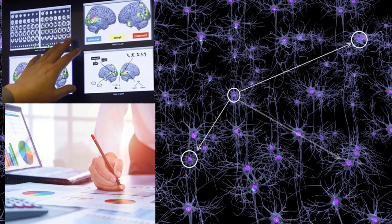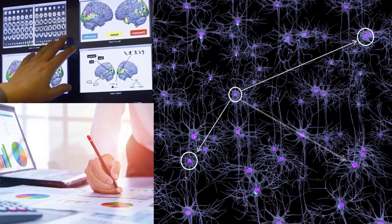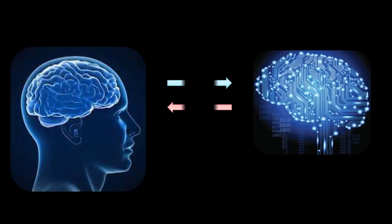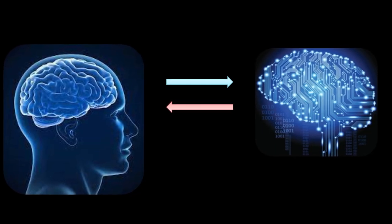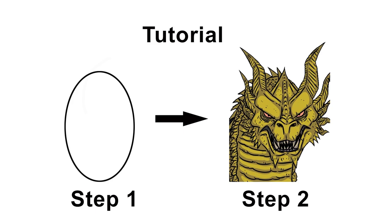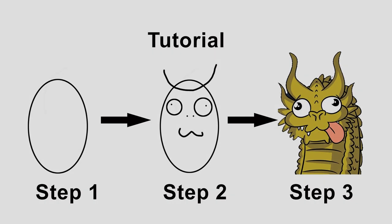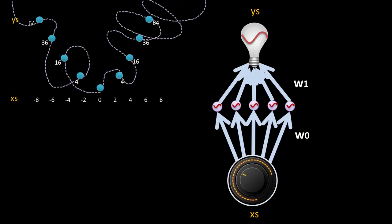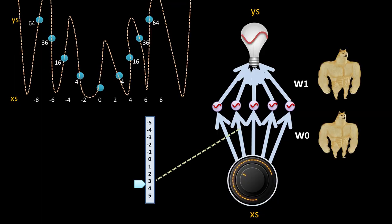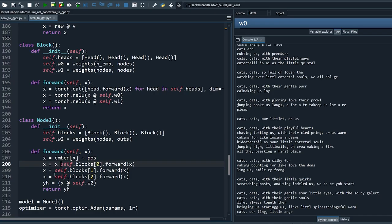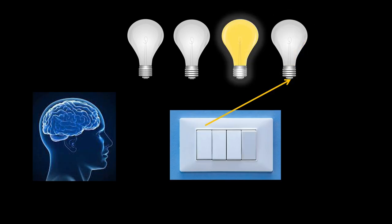I am interested as a neuroscientist because it gives me more insight into how AI and the brain can inspire each other. I'll try my best to provide a gradual transition between the concepts. I assume zero knowledge in machine learning. If you know some programming you can follow along; if not, you can still learn from the illustrations and analogies.